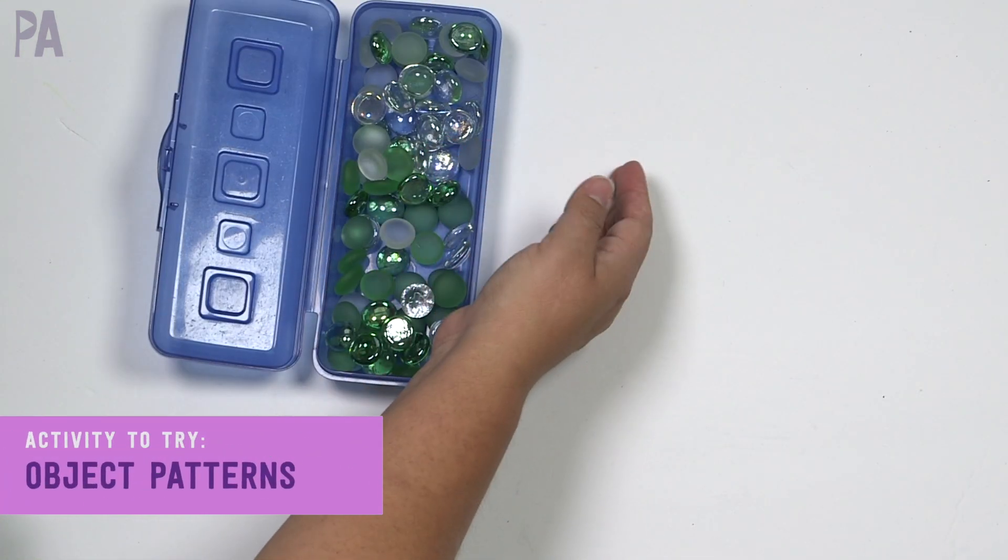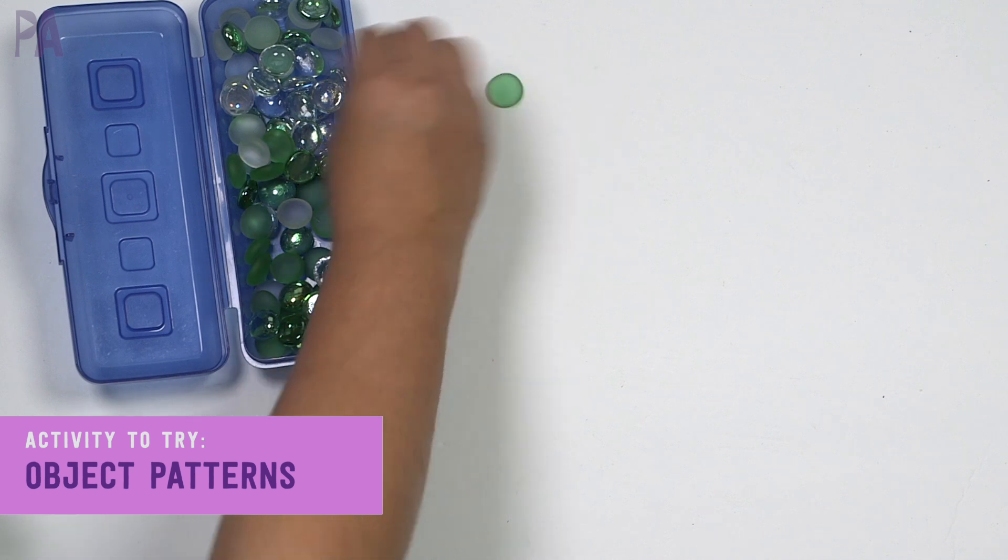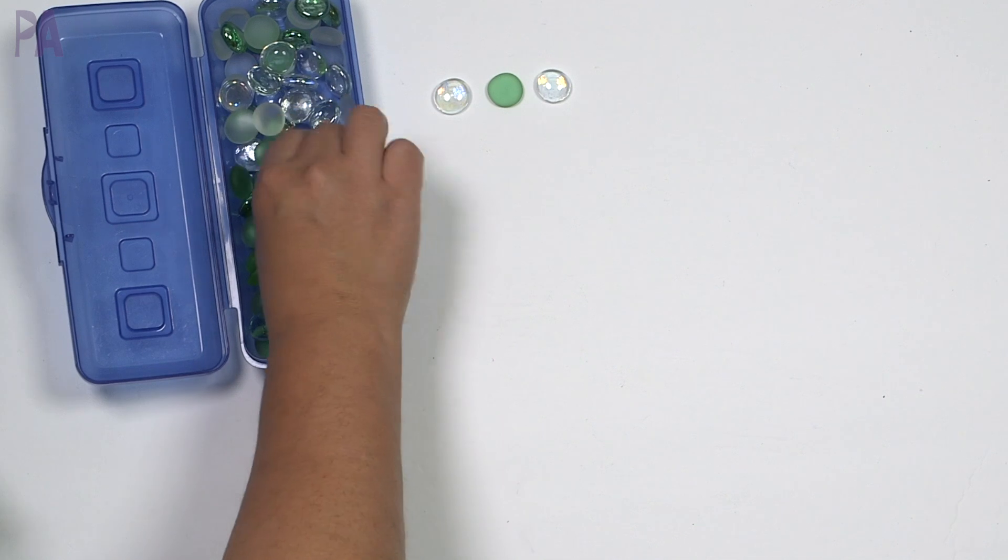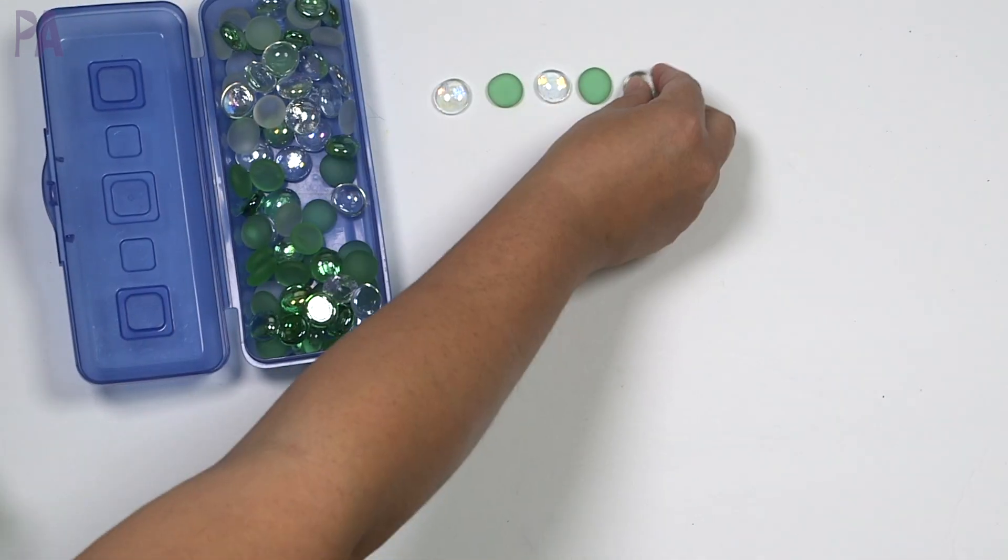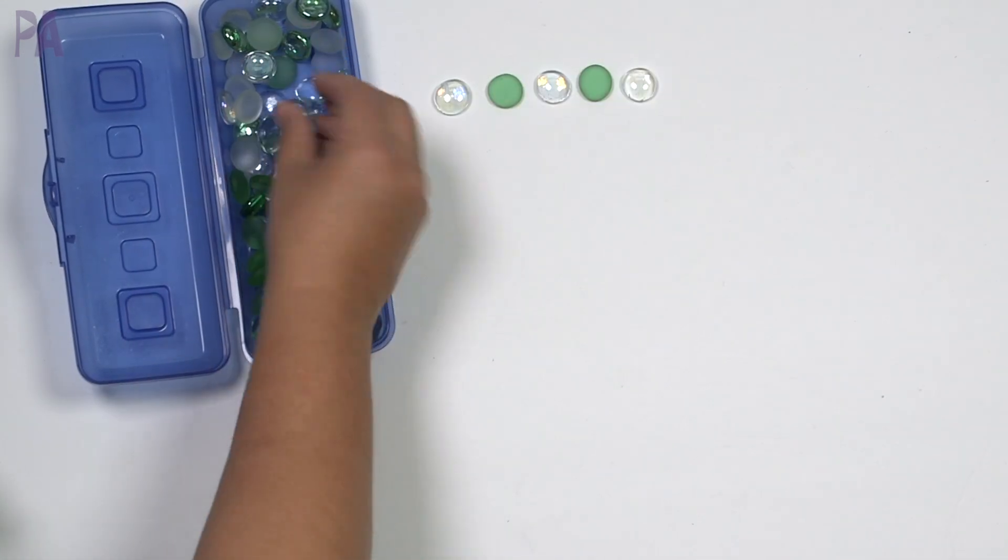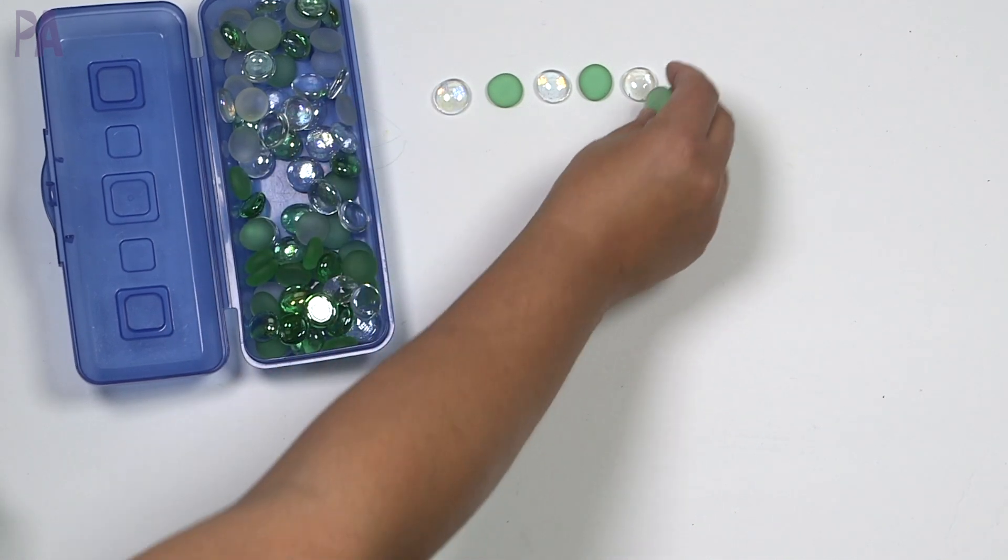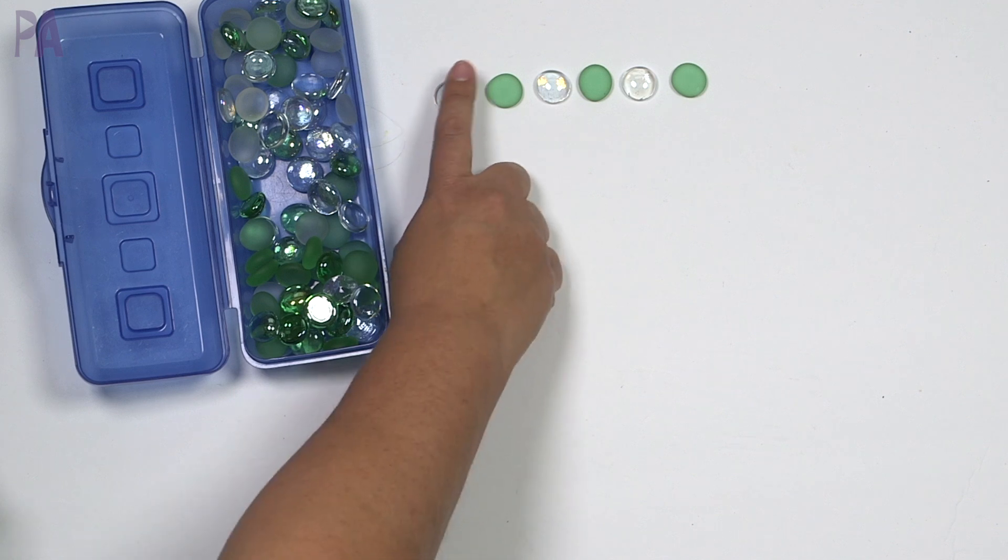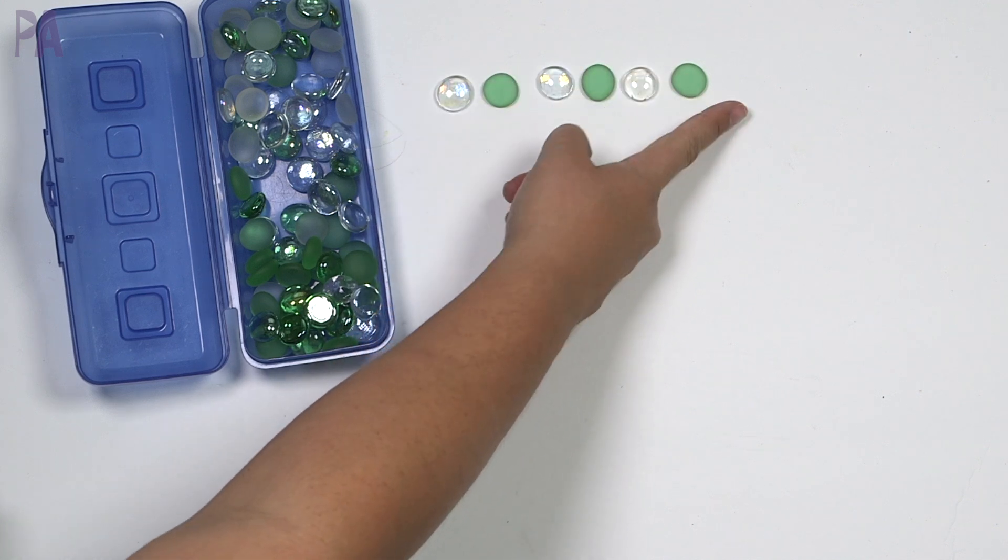You can also do patterns with objects. Here, I have a whole bunch of gems. I wanted to show some Dollar Tree options. I've had these for years, and you can do the same kind of patterns with these, just a physical object. You can do it with toys, with Legos, with matchbox cars. AB-AB-AB, what comes next? Or clear green, clear green, clear green, what comes next?